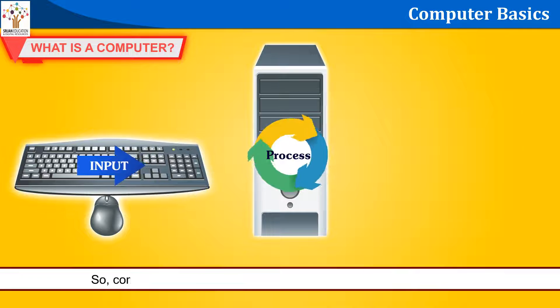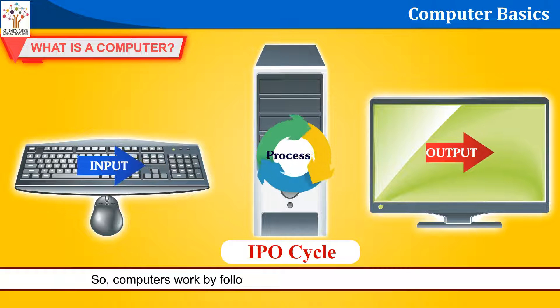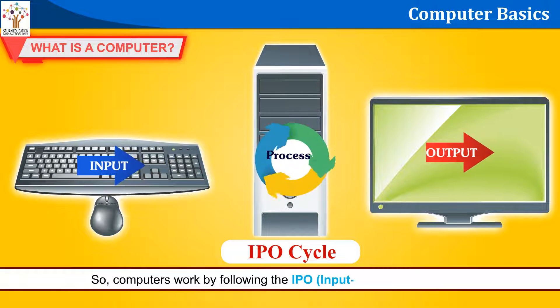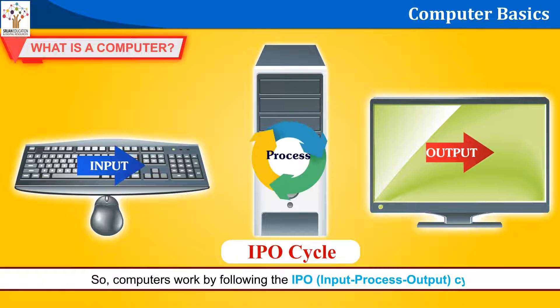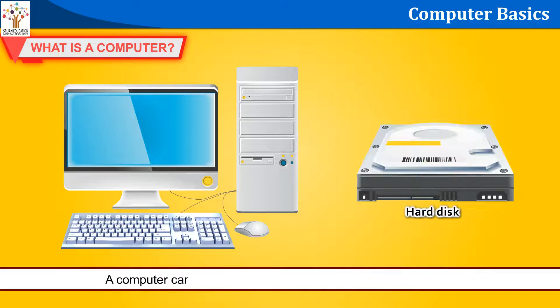So, computers work by following the IPO — Input, Process, Output — cycle. A computer can also store your data. You can use this data later on.